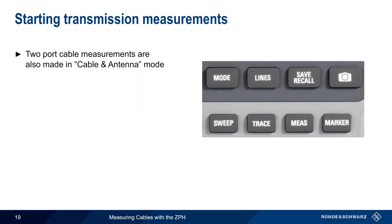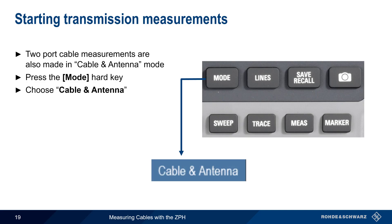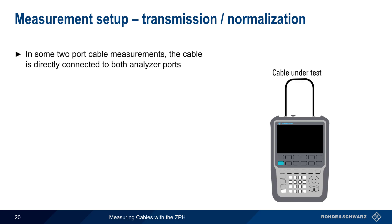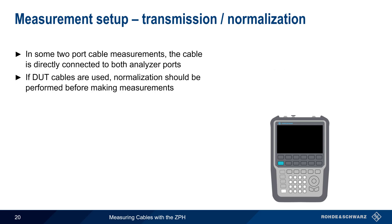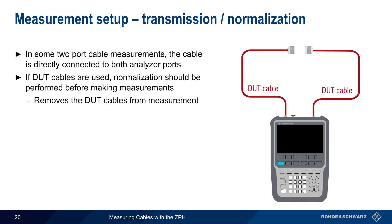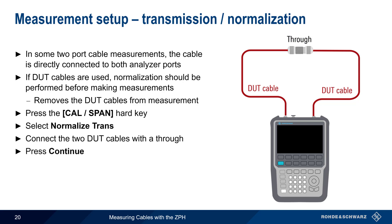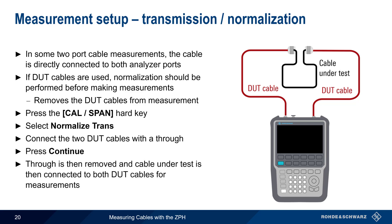Two-port cable measurements are also made in Cable and Antenna mode. As before, press the Mode Hard key, and then choose Cable and Antenna. Pressing the Measure Hard key and choosing Transmission will place the ZPH in transmission measurement mode. In some two-port cable measurements, the cable under test is simply directly connected to both analyzer ports. If however DUT cables are used to connect the cable under test to the analyzer, then a normalization should be performed to remove the influence of these DUT cables on the measurement. Normalization is run by pressing the CAL SPAN Hard key and selecting Normalize Trans. After a THRU is used to connect the DUT cables, press Continue to run the normalization. After this completes, the THRU is removed and the cable under test is connected to both DUT cables for making the measurement.